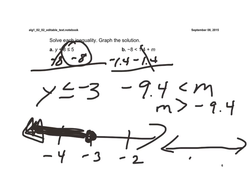So now I have a negative 9.4, so I'm going to have negative 10 and negative 9. Negative 9.4 would be about right here. It's greater than, so it's an open circle this time and shaded to the right.